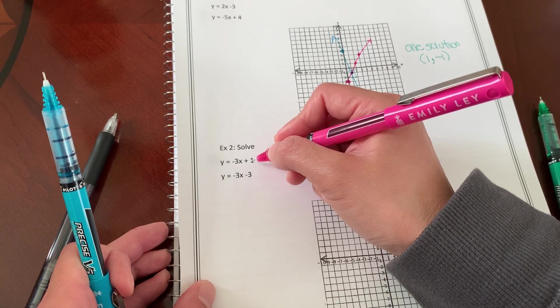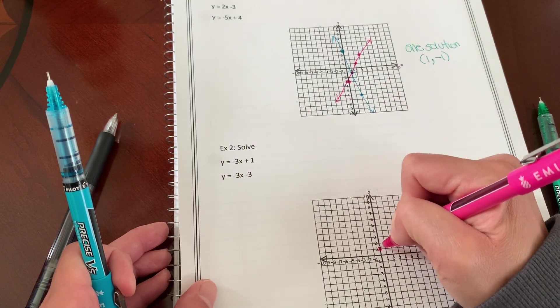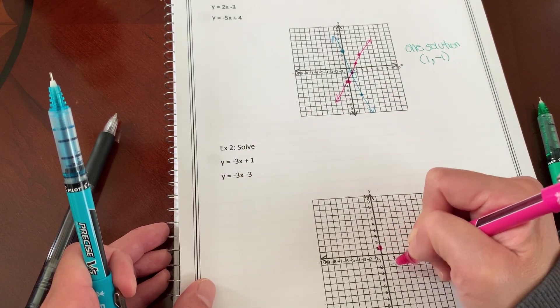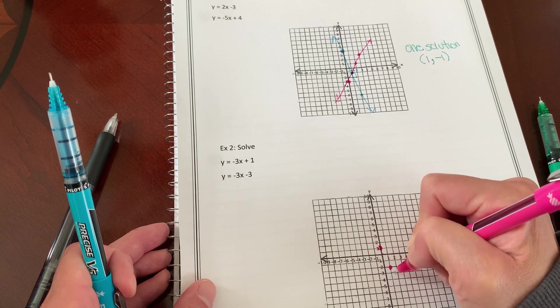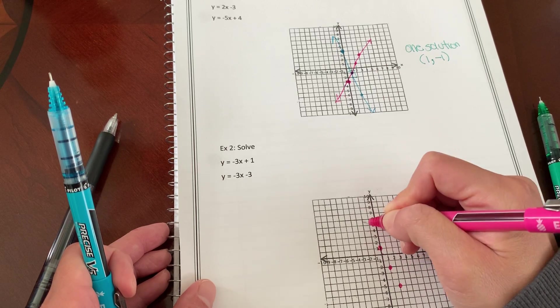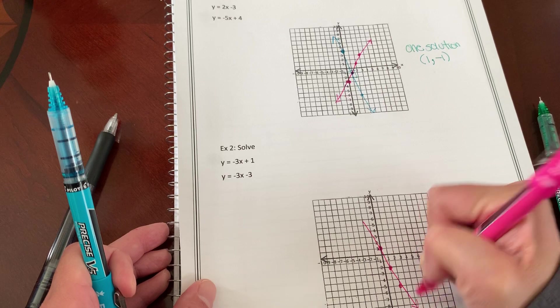So equation one is positive one, and then down three, one, two, three, right one. Down three, one, two, three, right one. Okay, so my line looks like this.